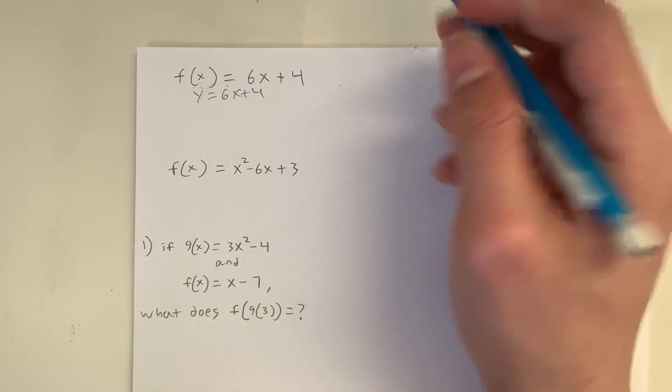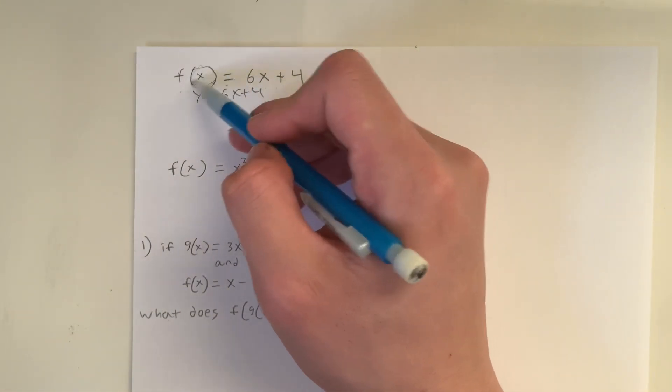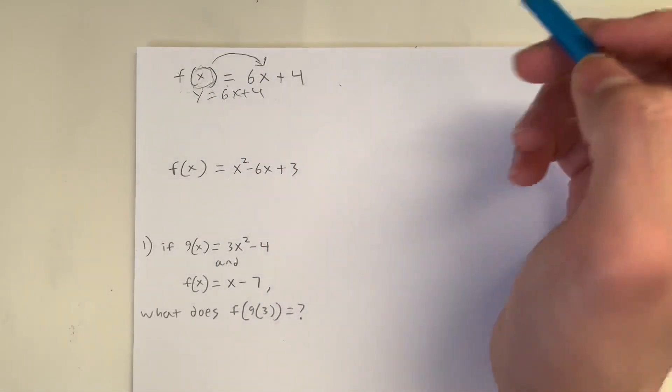Basically, what it's asking is that we're just going to plug in this value, whatever value they give us, in for every value of x.